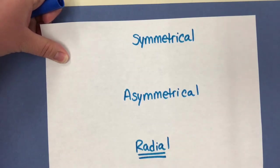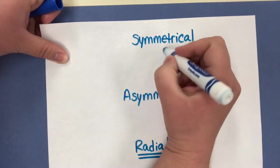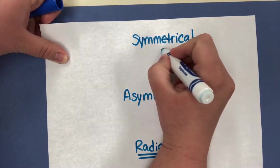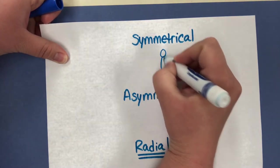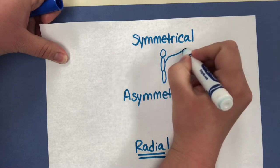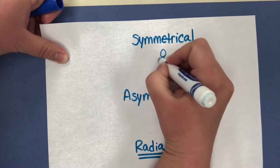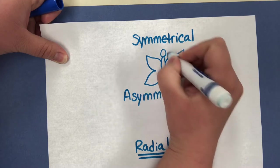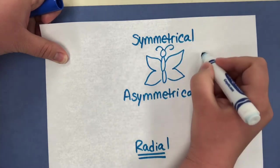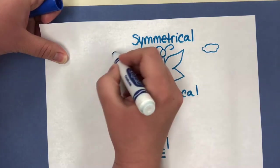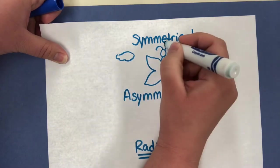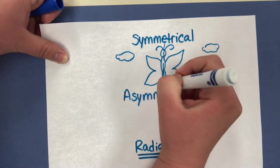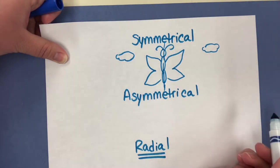So symmetrical, a lot of you have learned about symmetrical balance in class or symmetry. Symmetrical balance in an artwork is when the artwork is the same on both sides. So if I'm trying to draw a butterfly, maybe some clouds in the sky, it's going to be the same on both sides. So if I divide my canvas or my paper in half, same, same on both sides.